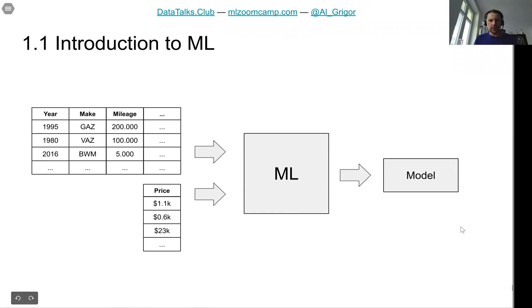In the first lesson we did a quick introduction into machine learning and we talked about the car price prediction example. We wanted to predict the price of a car and we looked at what the features are. The features are all the characteristics of a car that we have. This is everything we know about the car and then we have the target variable. This is what we want to predict about the car.